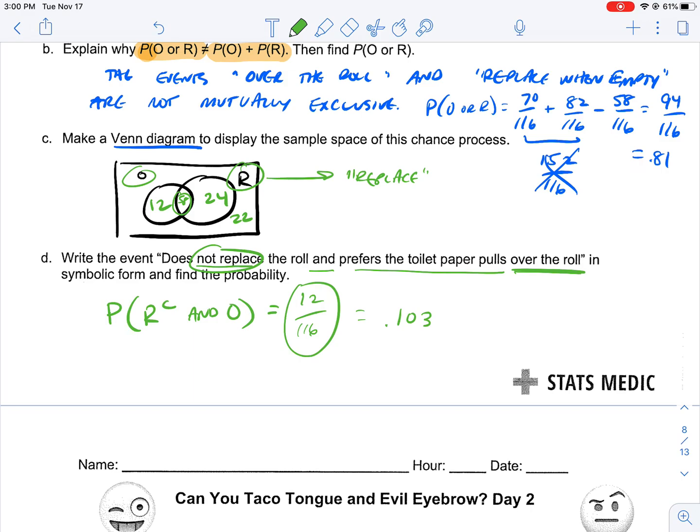That's the basics between the connection between two-way tables and Venn diagrams. Thanks a lot for watching.